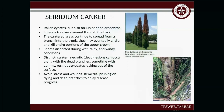Seiridium canker — often seen on Italian cypress, but also on juniper and arborvitae. It enters a tree via wounds through the bark. Cankered areas continue to spread from the branch to the trunk and will eventually girdle and kill the entire upper crown. Spores disperse during wet, rainy, and windy conditions. You'll see distinct sunken necrotic dead lesions along the dead branches, sometimes with gummy resinous material oozing from the surface. Avoid stress and wounds; remedial pruning of dying and dead branches can delay disease progress. The theme here is to minimize stress on your trees so they aren't susceptible to disease.